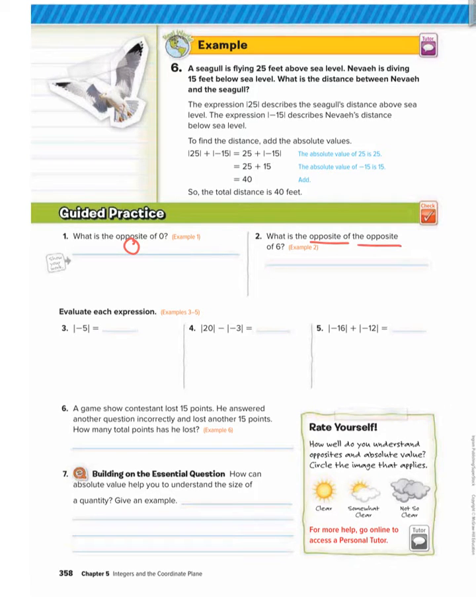Number two: What is the opposite of the opposite of six? The opposite of six would be negative six, and then the opposite of negative six would be positive six. So the opposite of the opposite is technically just itself. The answer is six.